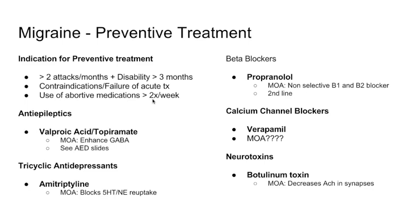For example, if a patient is getting headaches twice a week and needing sumatriptan, you can use preventative treatment. Preventative treatment consists of anti-epileptics, antidepressants, beta blockers, calcium channel blockers, and sometimes botulinum toxin. The most common anti-epileptics are valproic acid and topiramate.